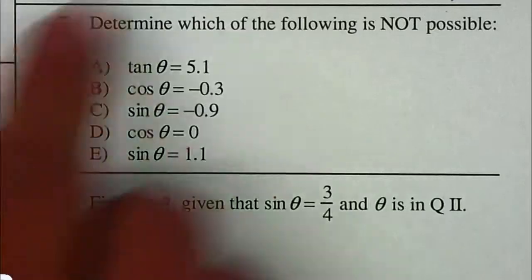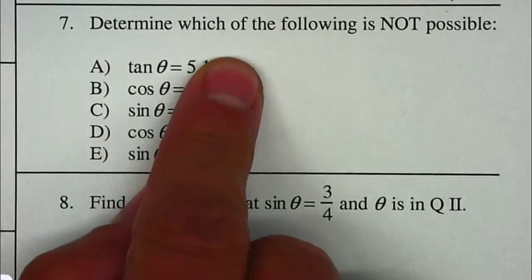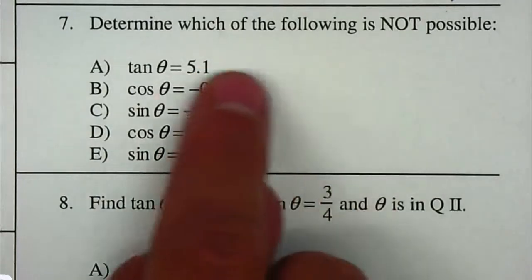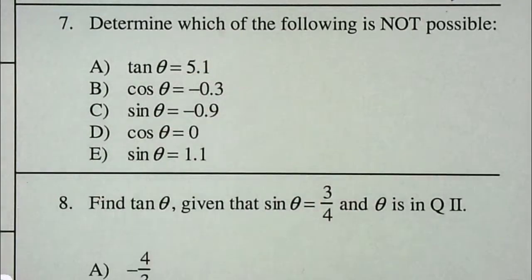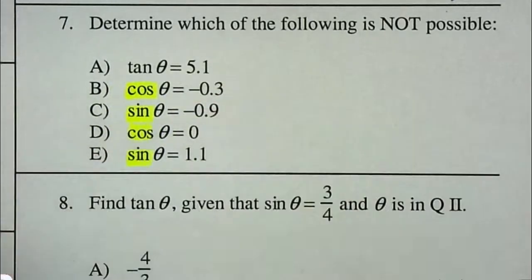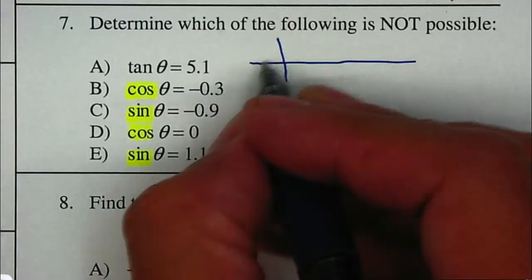I need to determine which of the following is not possible. Now, you need to remember that whenever you're working with cosine or sine, if you go back to the graphs, the graph of sine and cosine...